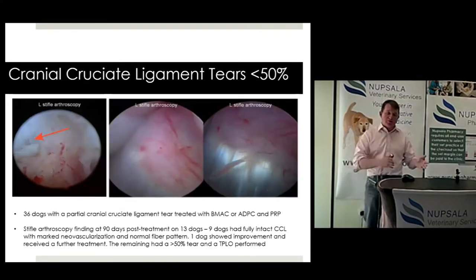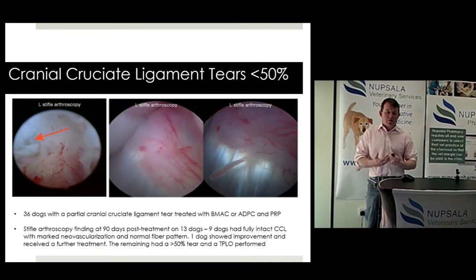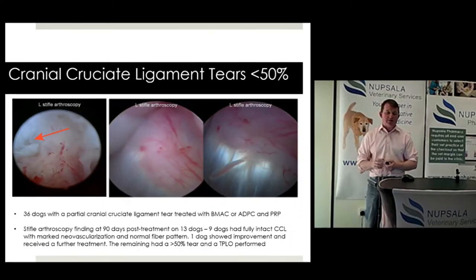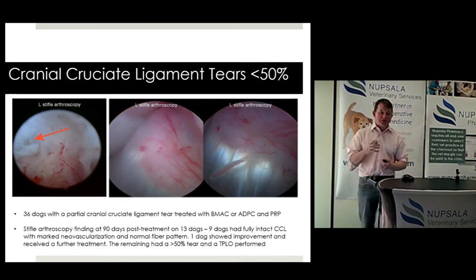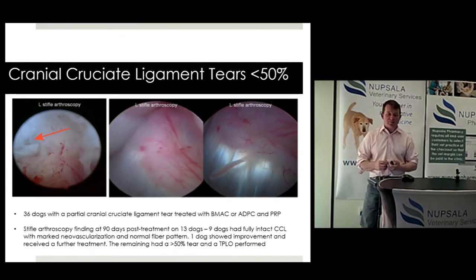Switching back to canine, this paper demonstrates how BMAC or a cell fraction works in the canine setting. Some really good work here by Sherman Knapp at the VOSM — the Veterinary Orthopaedic Sports Medicine clinic in the States. He's been instrumental in driving forward the use of biologics in the US small animal market. This particular paper looks at cranial cruciate ligament tears of less than 50%, diagnosed using the Insight Needle Scope.